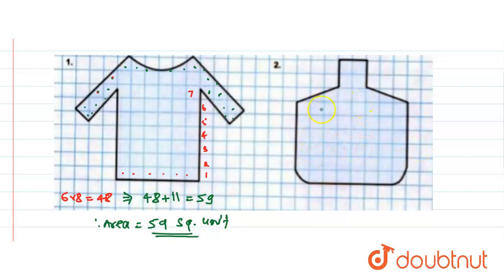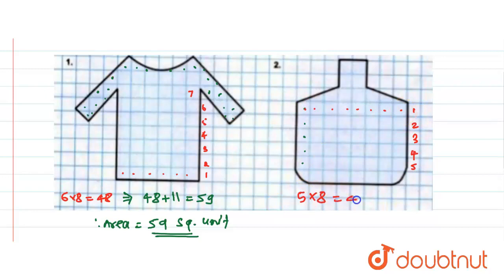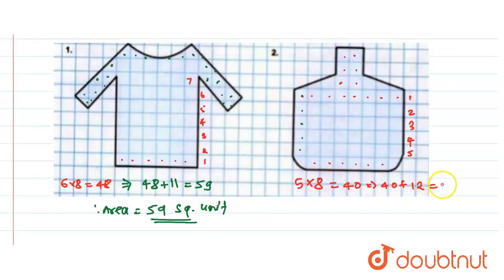Now let us come to the next figure and count the perfect squares. We have 5 rows, and in each row there are 8 squares, so 5 into 8 equals 40. Additionally, we count 1, 2, 3, 4, 5, 6, 7, 8, 9, 10, 11, 12 more perfect squares. So perfect squares total 40 plus 12, which is 52.